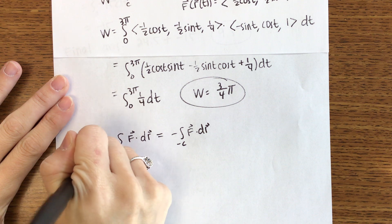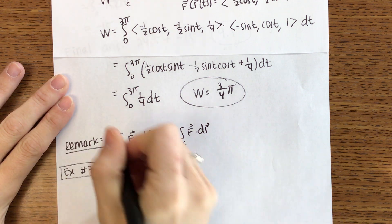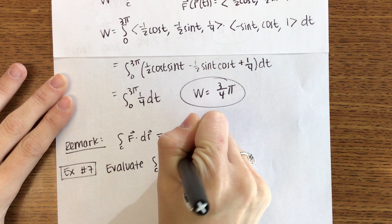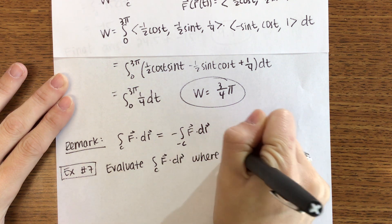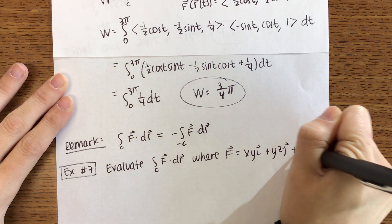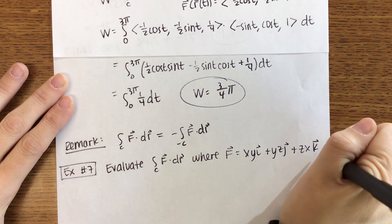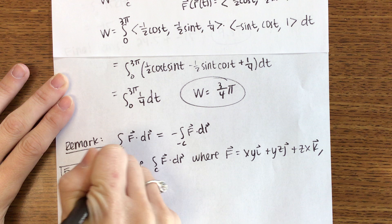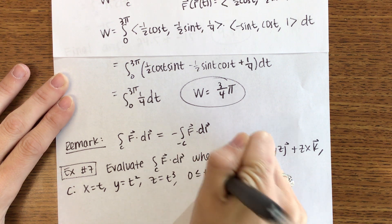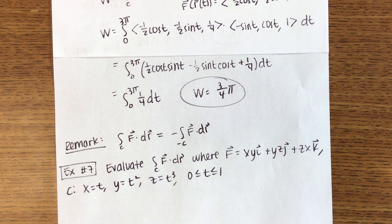Here's our next example. We are going to evaluate the line integral along the curve C of F dot dR, where F is the following: XY I plus YZ J, add ZX K. C is the curve defined by X equals T, Y equals T squared, Z equals T cubed, T between 0 and 1. This is one I would like you to do. It's similar to the last problem with similar setup. Take a few minutes and see if you can get through this one.